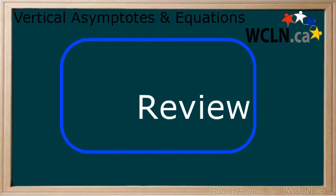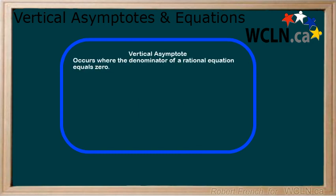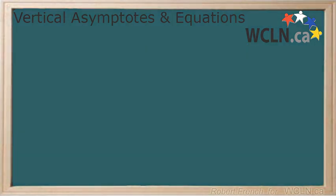In this lesson, you learned about rational equations and how having x in the denominator creates vertical asymptotes and that by solving the denominator for 0, you can find the location of the vertical asymptotes.